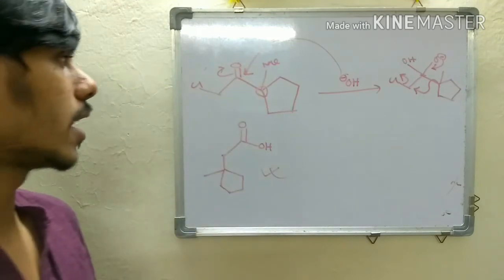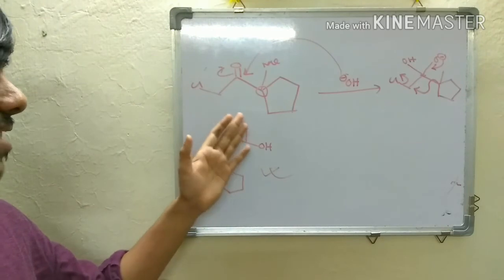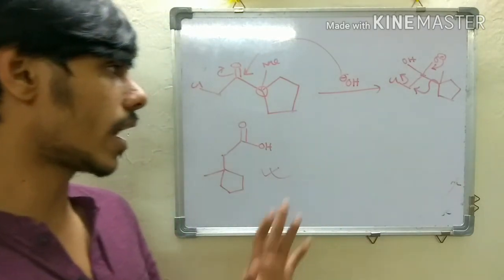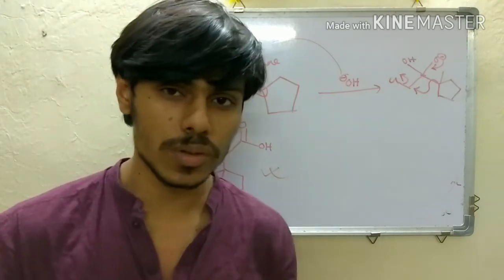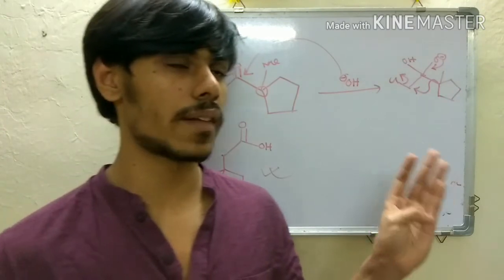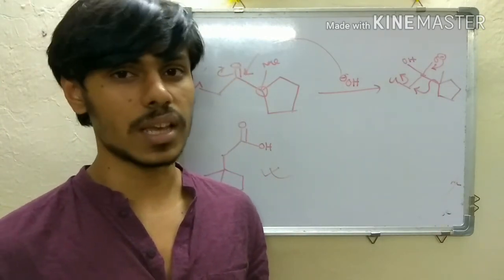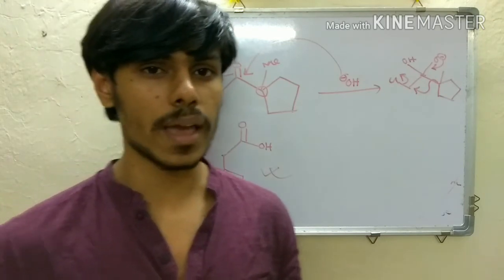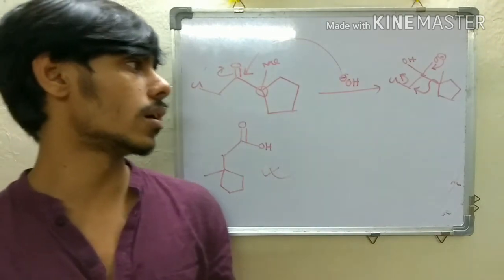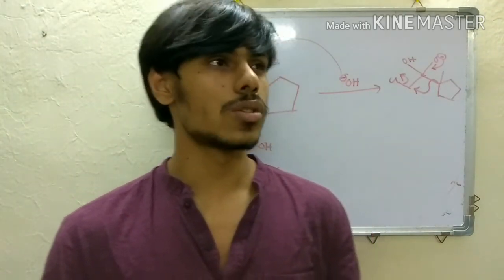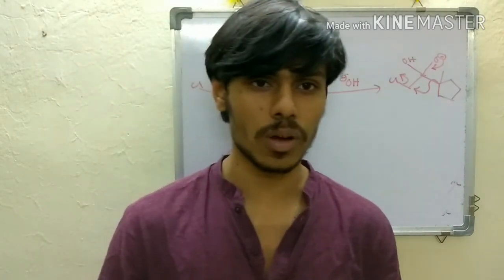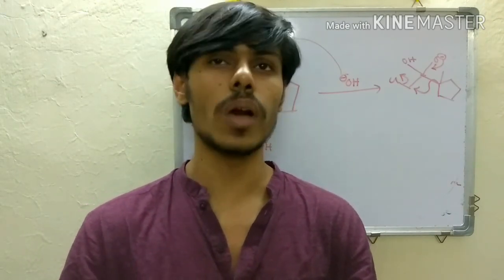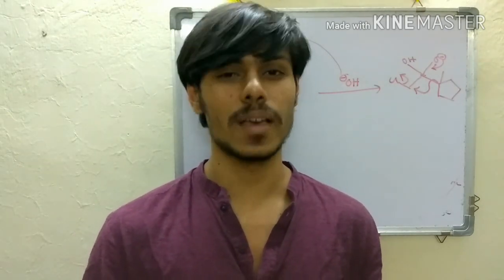The example I used was arbitrary to illustrate the case where alpha hydrogen is absent. You can find actual examples in Clayden. I suggest you read the 'Participation, Fragmentation and Rearrangement' chapter from Clayden — I think it is Chapter 38 — after watching this video. I hope I was able to explain the mechanism and variations of Favorskii rearrangement. If you liked the video, give a thumbs up and please subscribe. Thank you.